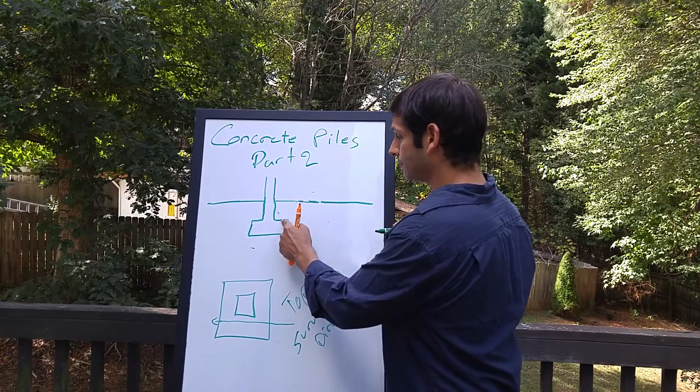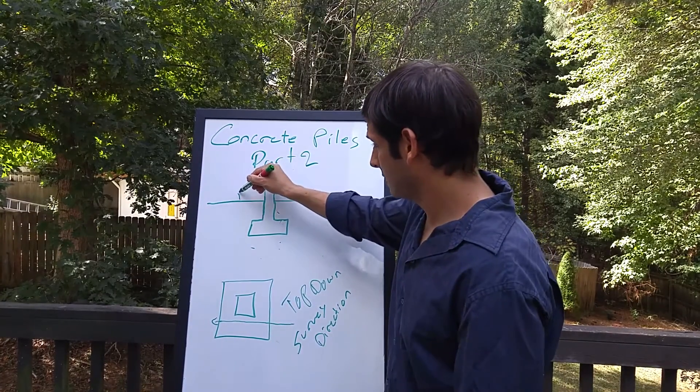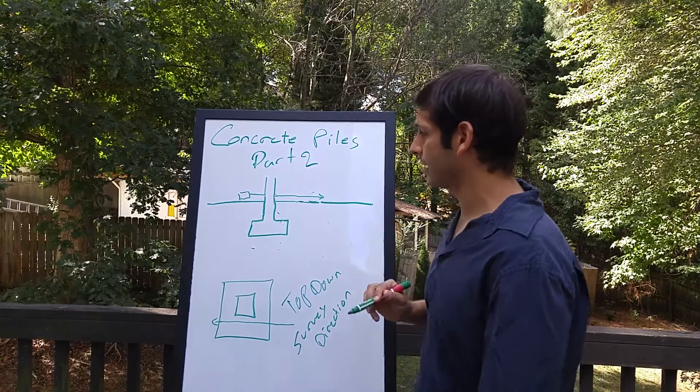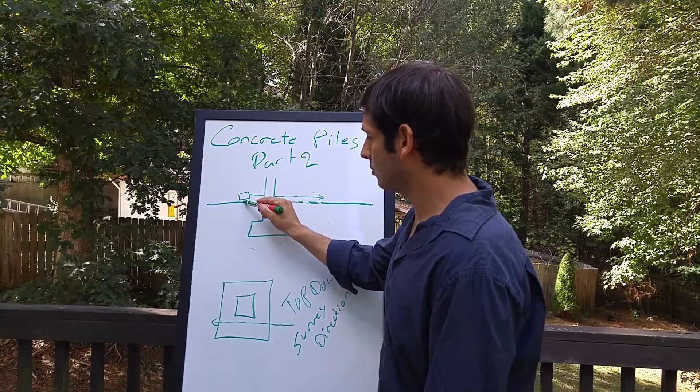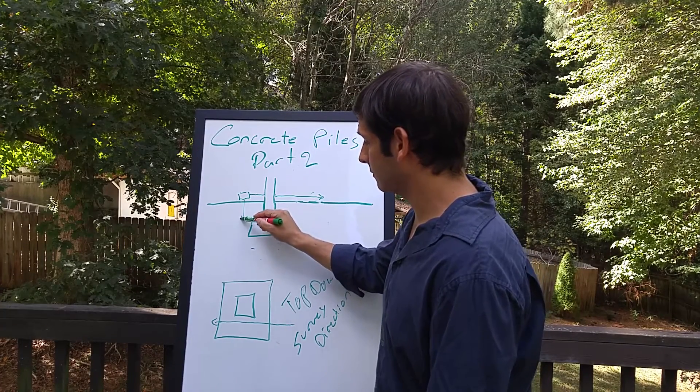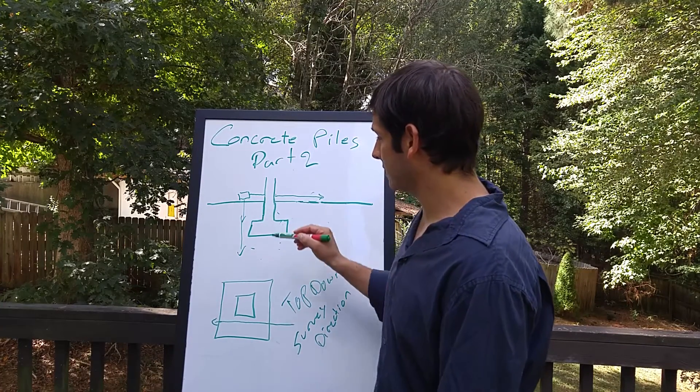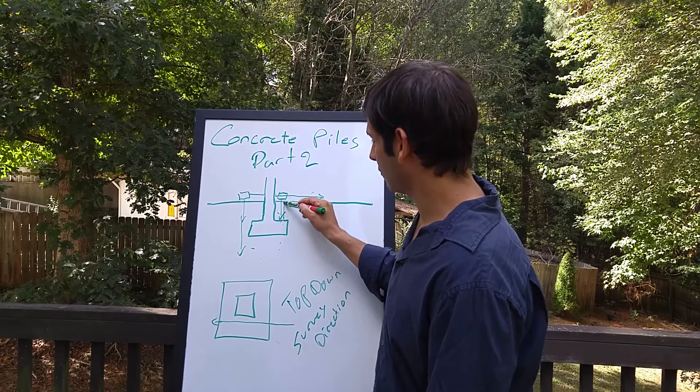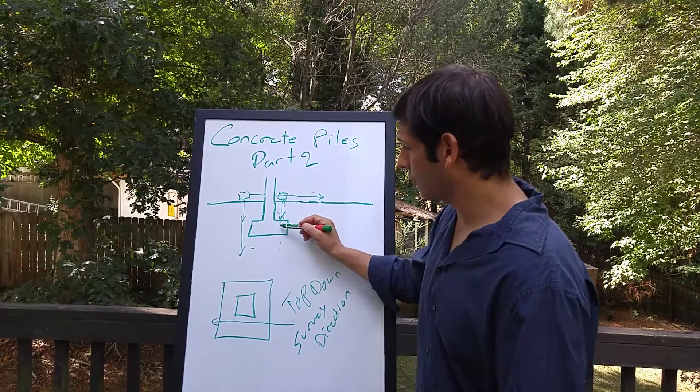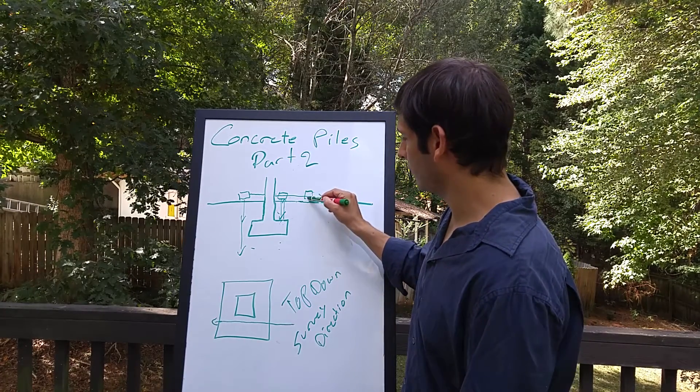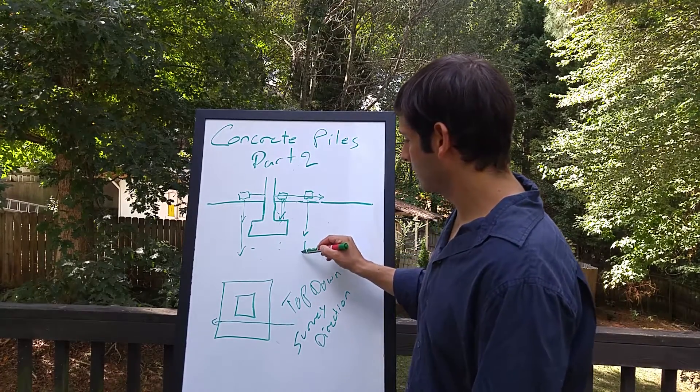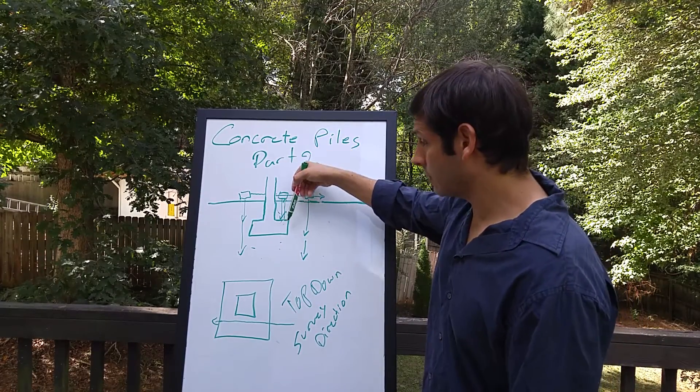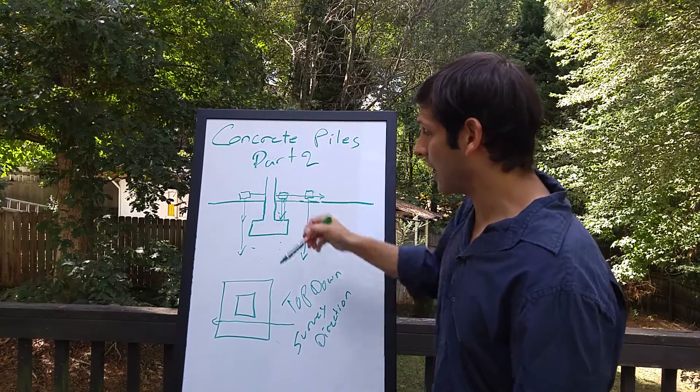So how does this work? You're at the ground surface. This is your radar. And you're putting it in this direction. You're pulling it or pushing it in that direction. It's putting out a signal into the ground surface. No reflection events. As it moves along, you're going to get a reflection off of the footer. And as it continues to move along, there'll be no reflection event.